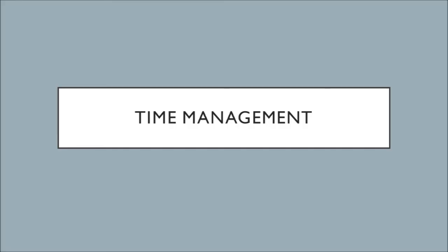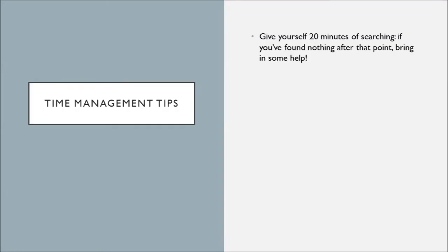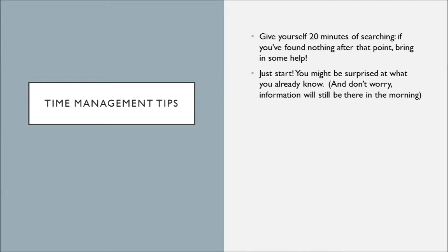And finally, some tips for time management. One of my big rules of thumb: if you are searching for more than 20 minutes and you found nothing on your topic, it's time to bring in a professional or someone who can help you out — this could be a friend, someone else in your class, your professor, or even a trusty subject librarian. If you're having trouble getting started, just start. You might be surprised at what you know. But remember, that's why there are drafts, rough drafts, outlines — all these things are there to help you. This is part of the process of research.